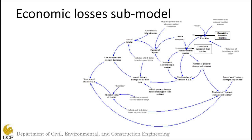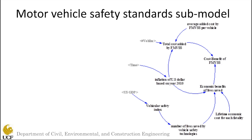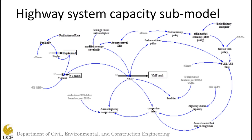The next sub-model is the Motor Vehicle Safety Standards sub-model, used to model the role of vehicle safety standards in preventing roadway fatalities. The Federal Motor Vehicle Safety Standards aims to provide minimum safety performance requirements. According to NHTSA, these requirements are specified to protect the public against unreasonable risks of crashes occurring as a result of the design, construction, or performance of motor vehicles. Here you see the estimated number of lives saved through implementation of many of the standards published by NHTSA, and we connect them in the sub-models.